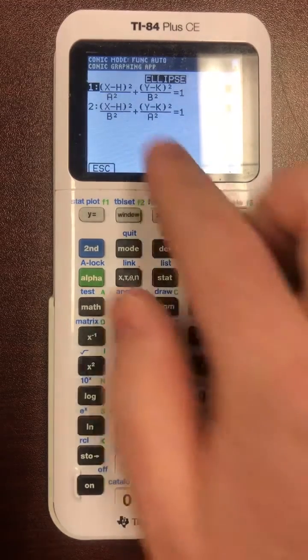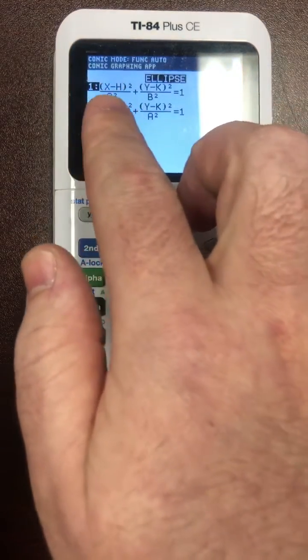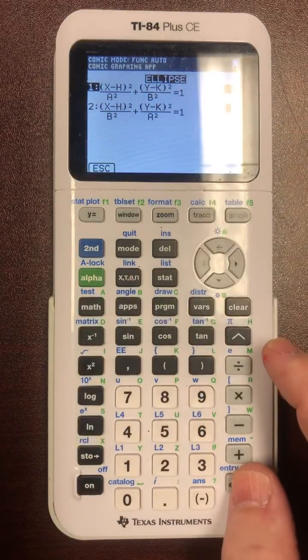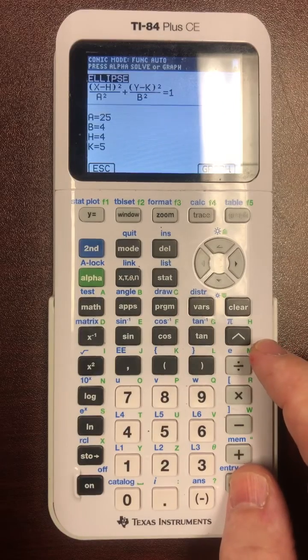A is always the bigger number. In this case, because x squared over 25, y squared over 4, we would choose the first one because a is always bigger.